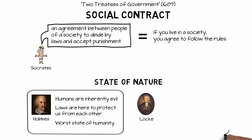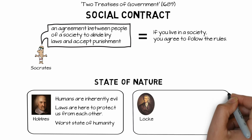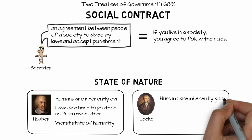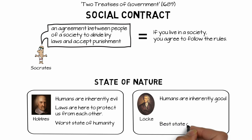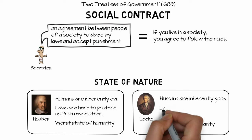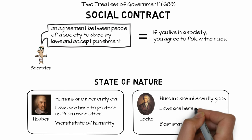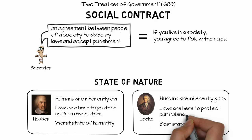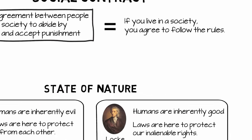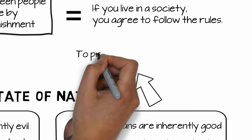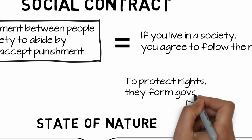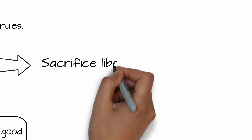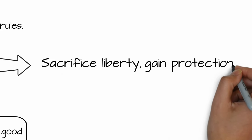Locke, however, completely disagreed. He proposed that humans are inherently good and, because we are all born equal, that the elimination of government would lead to liberty and equality, where everyone's inalienable rights would be guaranteed by each other. Locke realized that some people might take more than their fair share, and it's because people want to guarantee the protection of their inalienable rights that they form governments, or a social contract. All of these members sacrifice a little liberty to follow laws, but gain protection of their rights.